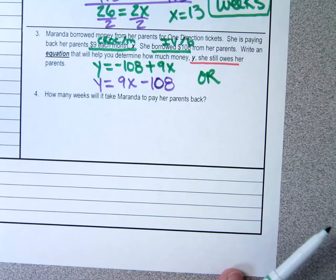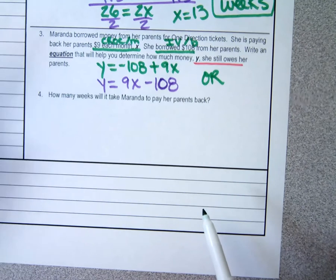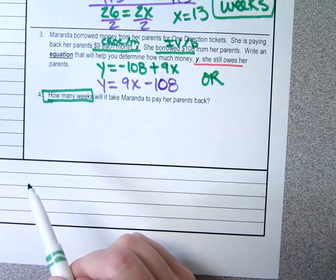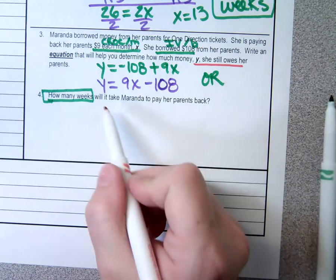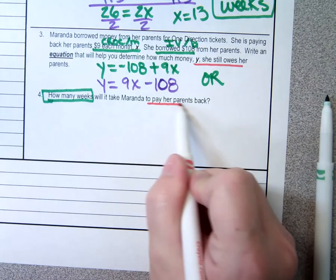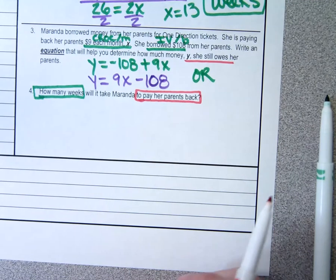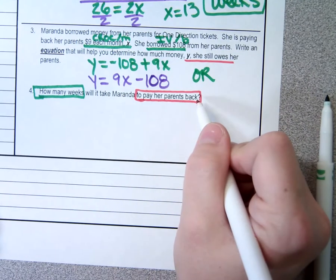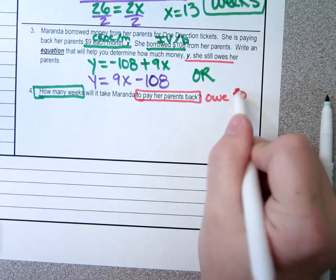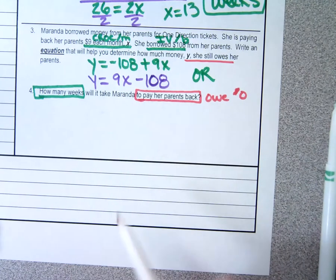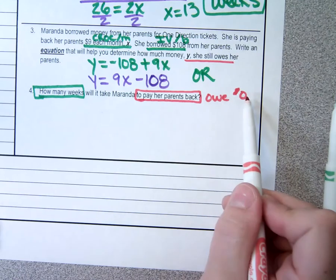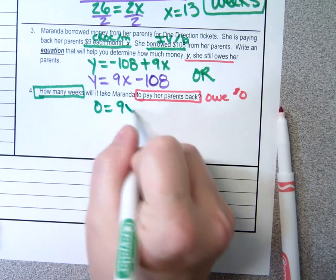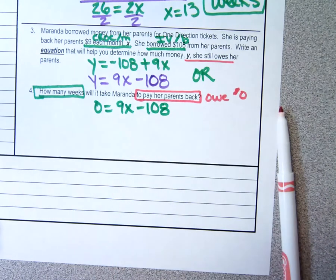Number four says: how many weeks will it take Miranda to pay her parents back? I'm trying to figure out how many weeks — which letter talks about weeks? To pay her parents back means she owes them zero dollars. If she owes zero dollars, we put zero into y. So I'm going to put zero into the y and recopy my equation.